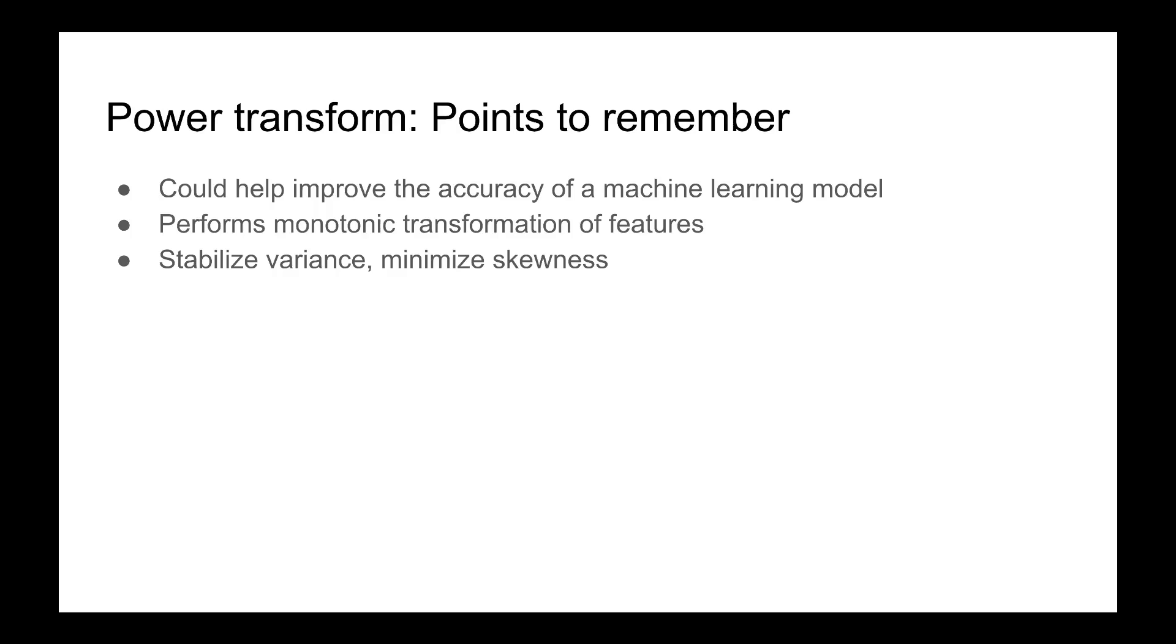Again, this is also a monotonic transformation. It means that the values are either continuously increasing or they are continuously decreasing. And this power transform can minimize skewness.